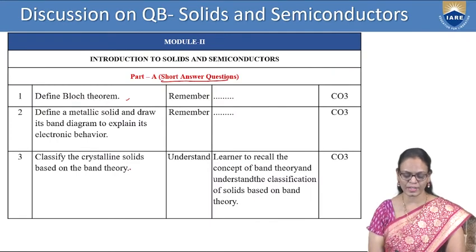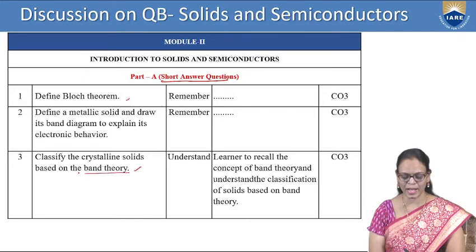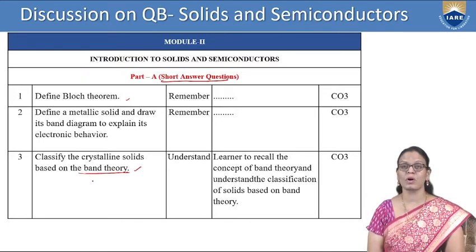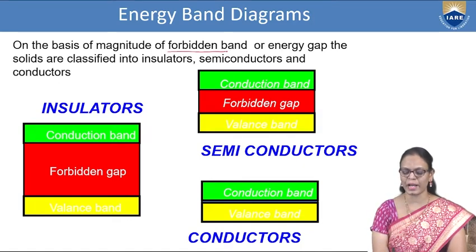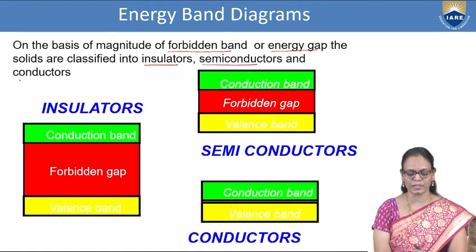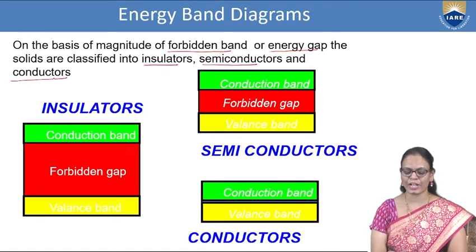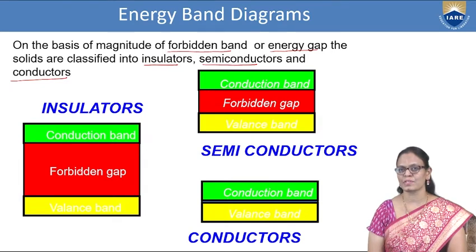The next question: classify the crystalline solids based on band theory. On the basis of the magnitude of the forbidden band energy gap, solids are classified into insulators, semiconductors, and conductors. These are the three classifications, and these are the band diagrams showing band versus energy.